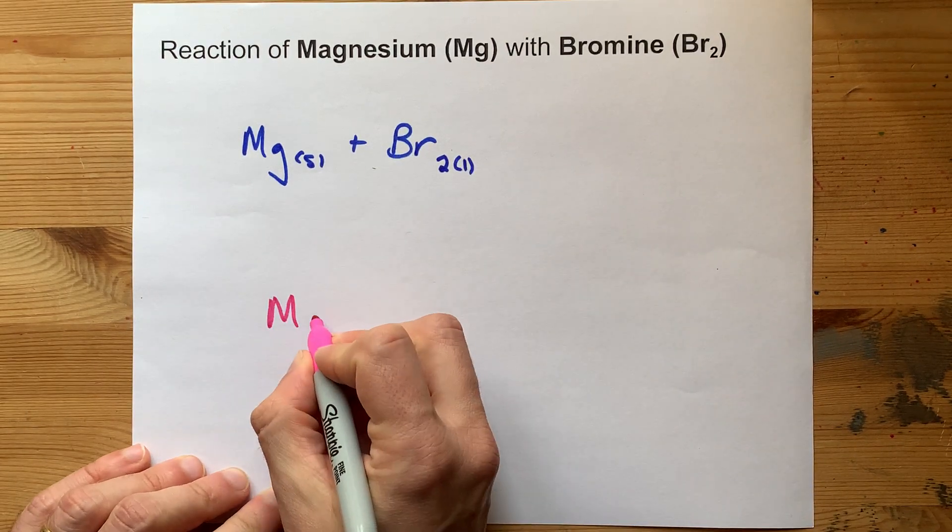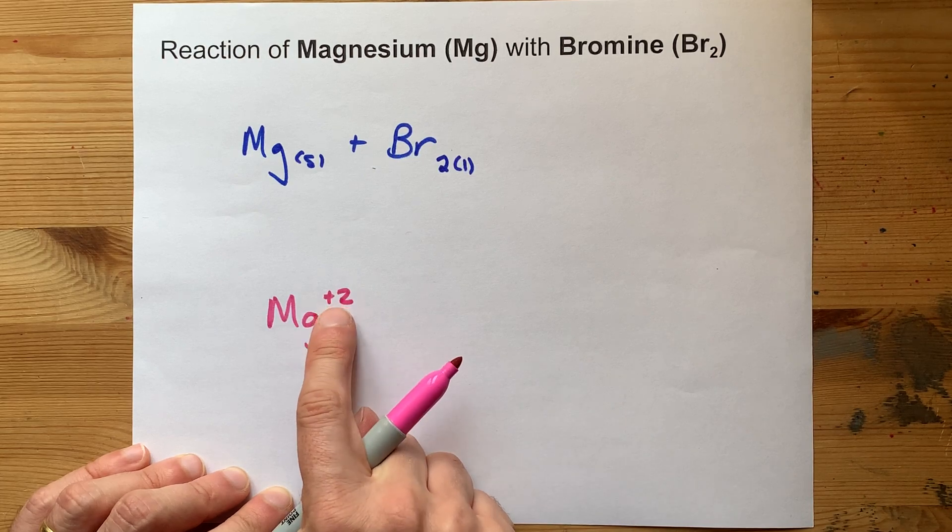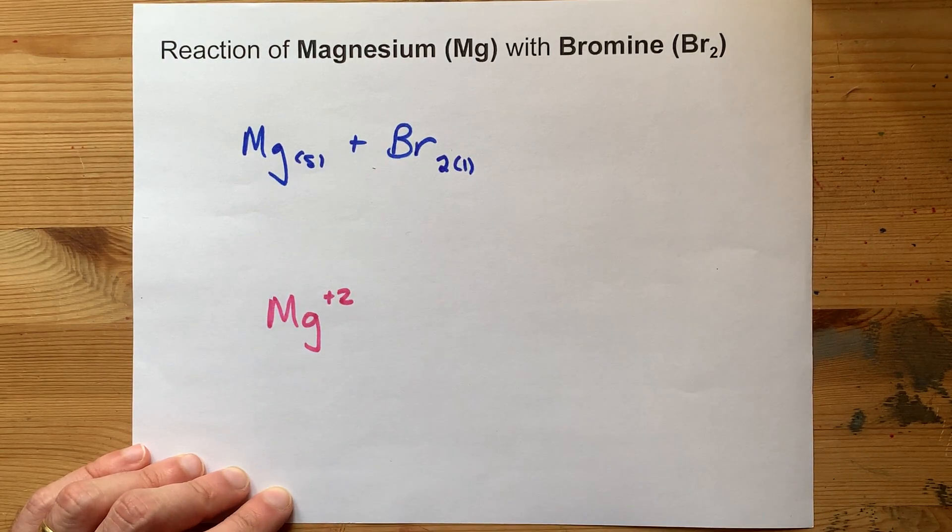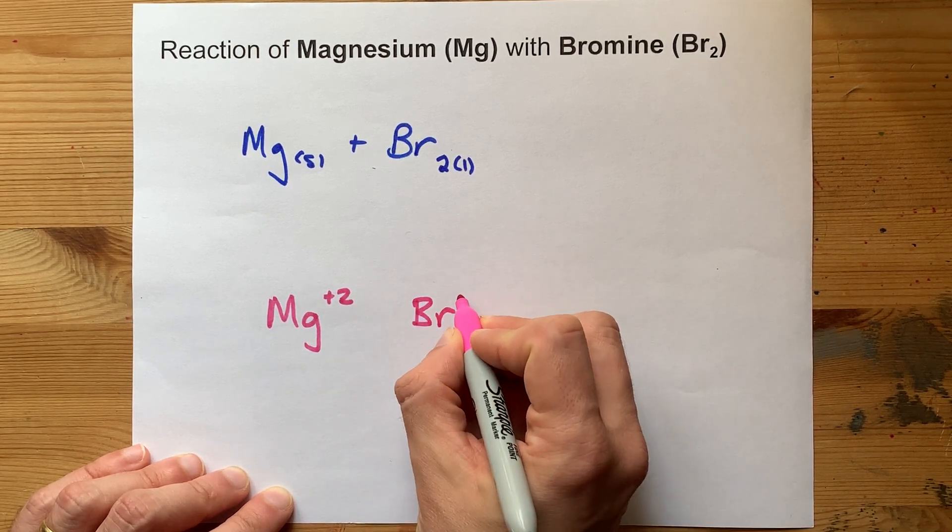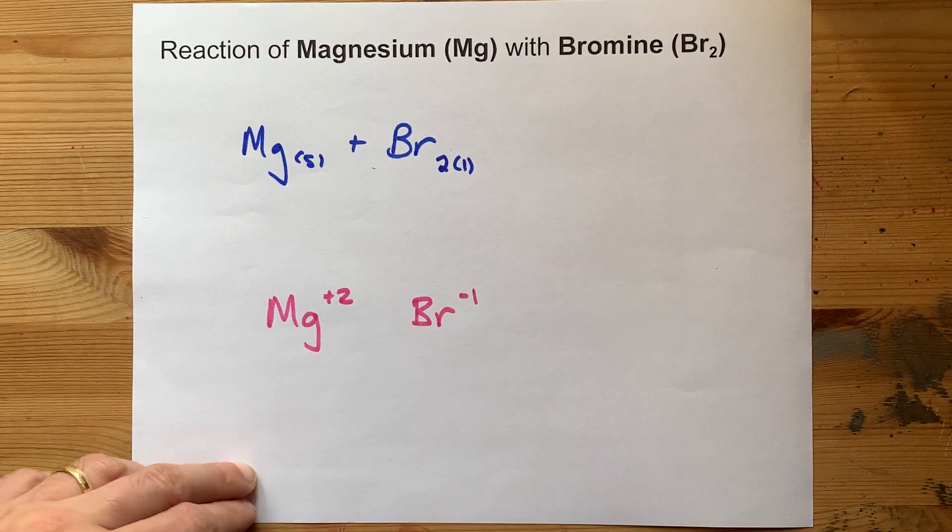What we said before was that magnesium wants to lose both of its outer valence electrons to get a charge of plus two. That's written on my periodic table. And bromine wants a charge of minus one. It wants to gain one electron to have the full octet.